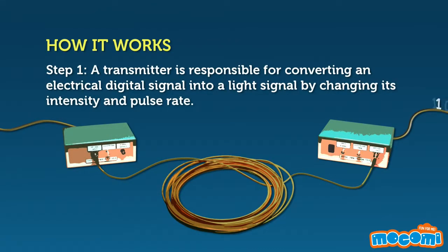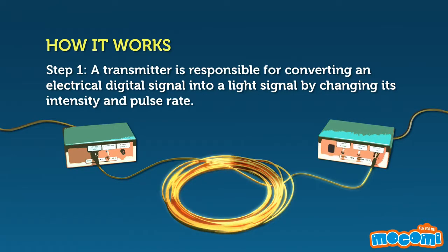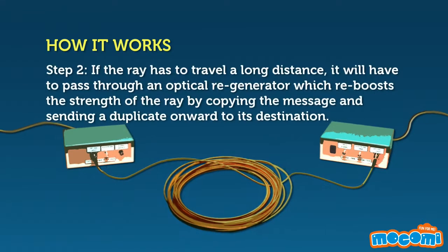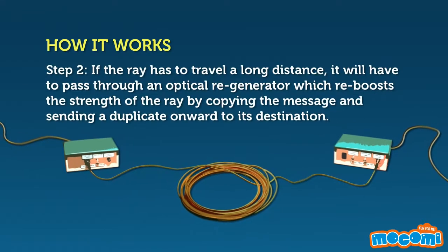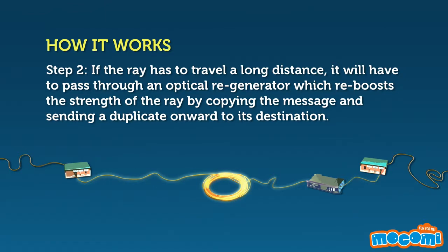A transmitter is responsible for converting an electric digital signal into a light signal by changing its intensity and pulse rate. If the ray has to travel a long distance, it will have to pass through an optical regenerator, which reboosts the strength of the ray by copying the message and sending a duplicate onward to its destination.